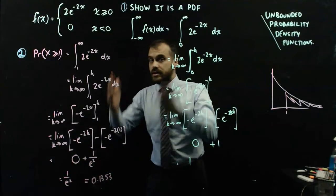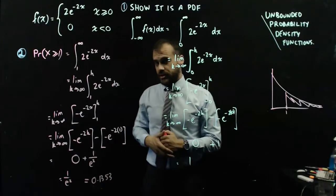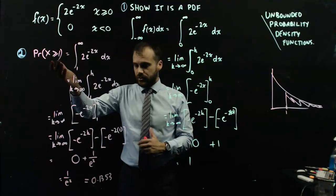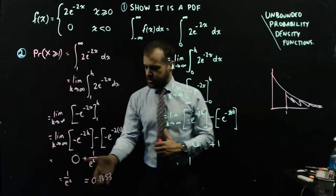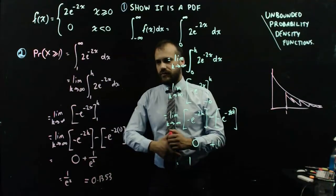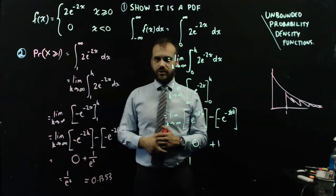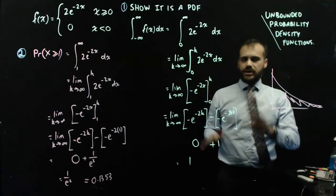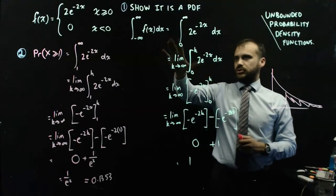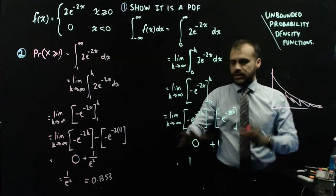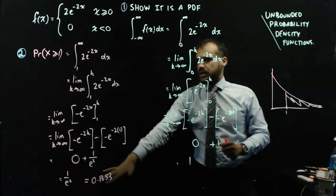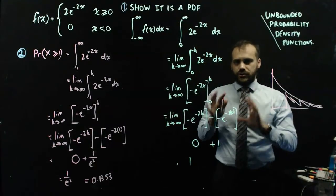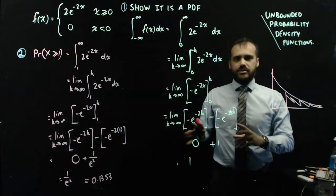So in this unbounded probability density function, the probability that x is greater than 1 is 0.1353. Make sure you've written the limit notation correctly and are using those limits appropriately.